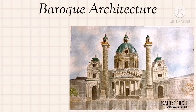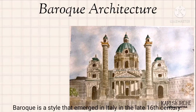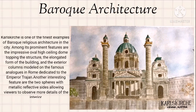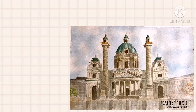Baroque architecture is a style that emerged in Italy in the late 16th century. Karlskirche is one of the finest examples of Baroque religious architecture in the city. Among its prominent features are the impressive oval high-ceiling dome topping the structure, the elongated form of the building, and the exterior columns modeled on the famous columns in Rome. Another interesting feature includes two pillars with metallic reflective sides allowing viewers to observe more details of the interior. This church is located in Vienna, Austria.